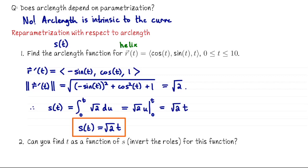The next question is, can I invert the roles? Can I invert this function and say that t is a function of s? And the answer is yes. If s equals the square root of 2 t, then t equals s divided by the square root of 2. Now we've done the first two steps of reparametrization with respect to arc length. So the first thing we did was we computed the arc length function s and then we inverted to find t in terms of s.